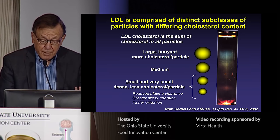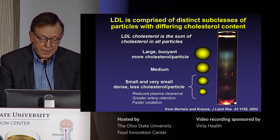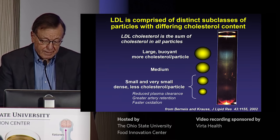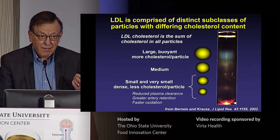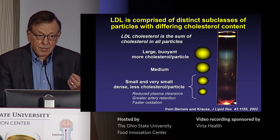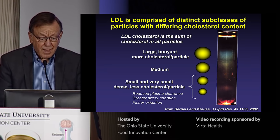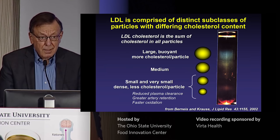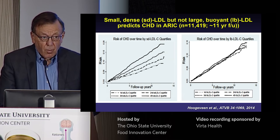Large, cholesterol-rich particles float to the top of the tube, down to the small and very small particles that are cholesterol- and lipid-depleted and sink to the bottom — large buoyant versus small dense. The small, dense particles have properties that render them more likely candidates for causing vascular disease. They have lower plasma clearance from the bloodstream; LDL are taken up through receptors mainly in the liver, and these particles are cleared more slowly. They're retained in the arteries more tightly and are oxidized more rapidly, making them more inflammatory and toxic.